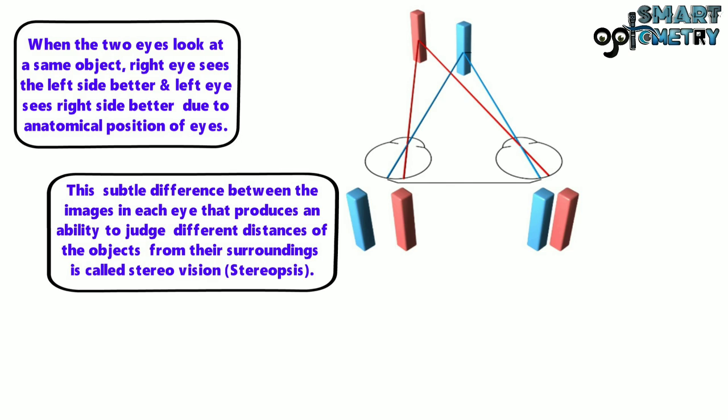Here you can see that the left eye sees the right side better and the right eye sees the left side better of the two objects in front of the eyes.